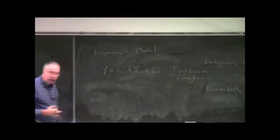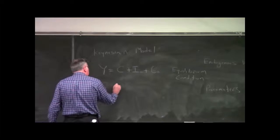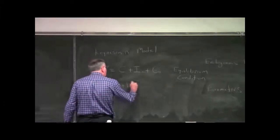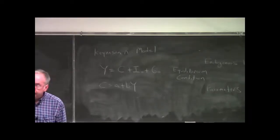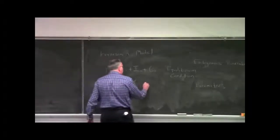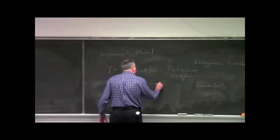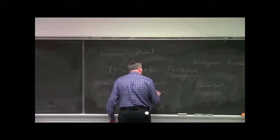The other equation in this simple model is a consumption function: C equals A plus BY. Consumption in this model is a linear function of national income. We assume that A is positive, and we assume that B, the marginal propensity to consume, is between 0 and 1.